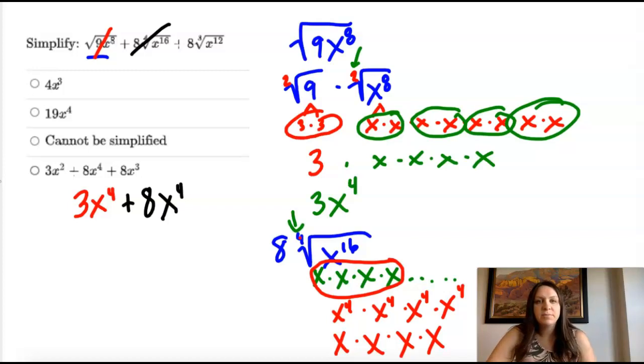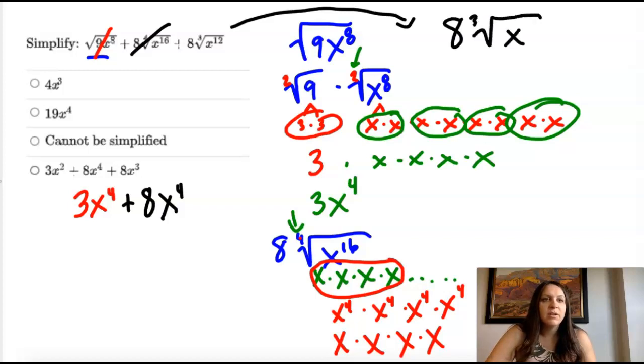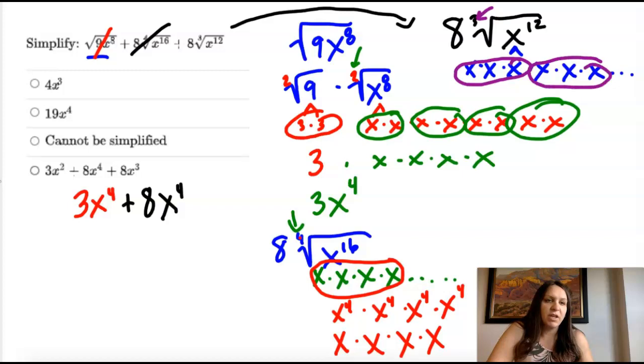And then last one, let's write it over here. I have eight. And now I have a cube root of x to the twelfth. So this one, you guys, that's twelve x's. Which I can write them all out if I'm not going to. I'm looking for groups of three. So there's one group of three. There's two groups of three. And if I continue that out to twelve, I would have four groups of three. And when I take the cube root of x to the third, we're just left with x. And I get that four times.